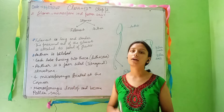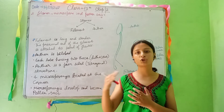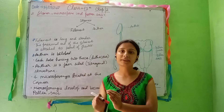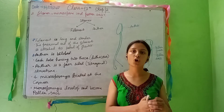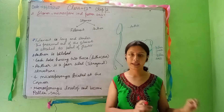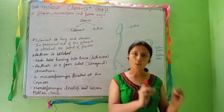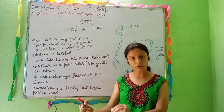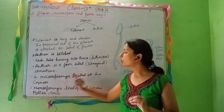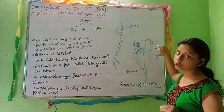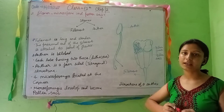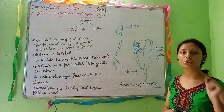Now, what is microsporangia? Microsporangia are the structures inside the anther in which pollen grains and microspores develop and grow. There are four microsporangia in the anther — one, two, three, four — inside which microspores and pollen grains develop.